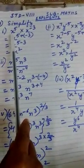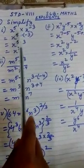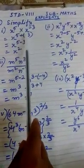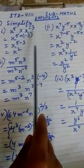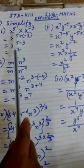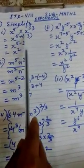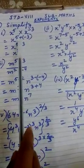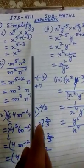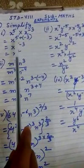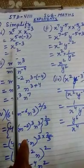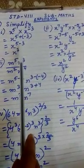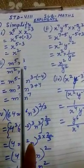Our first sum is x to the power 5, multiplication x to the power minus 3. We had done that if bases are same, we can add the powers. So here we have done the same — we have added the powers, so we get x to the power 5 plus minus 3, that is x to the power 2.